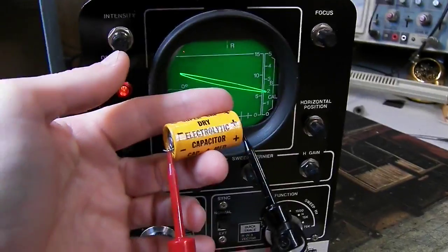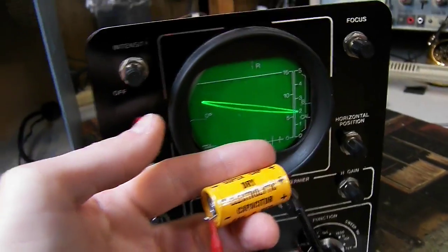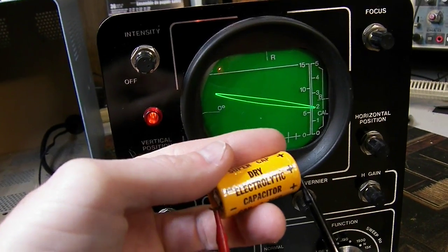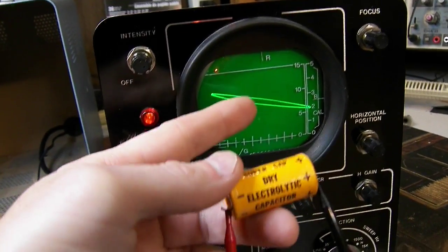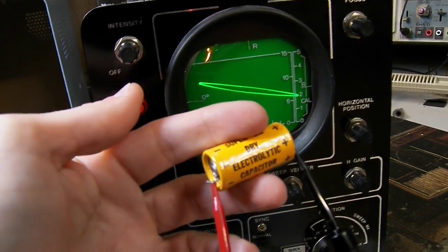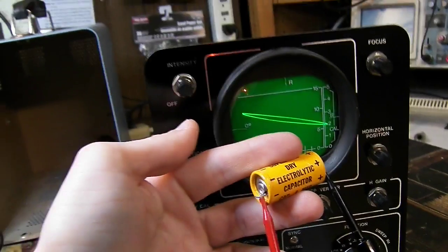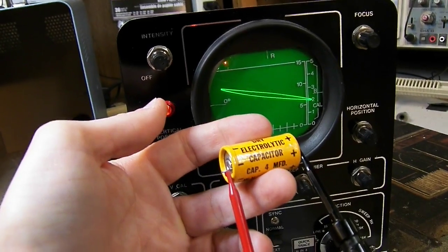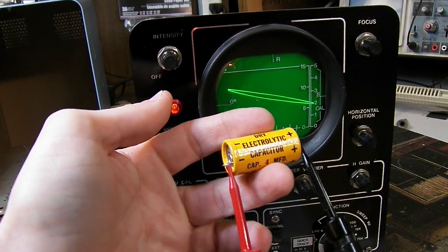Okay, here's the other dry electrolytic. And as you'll see, it has a little bit of an oval pattern. And this is, you should see an oval pattern, but you can see that this one is obviously bad. Let me go ahead and get a good 4 microfarad as a comparison. And I'll show you that.